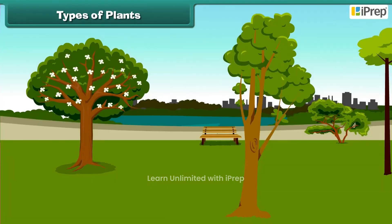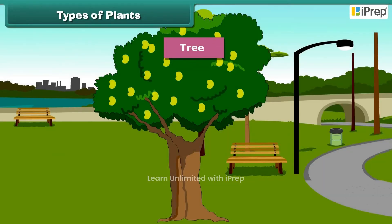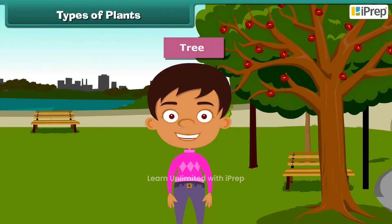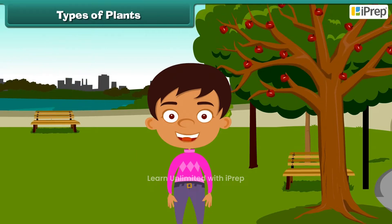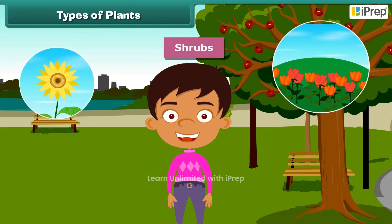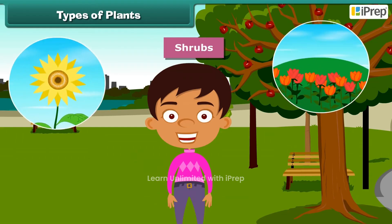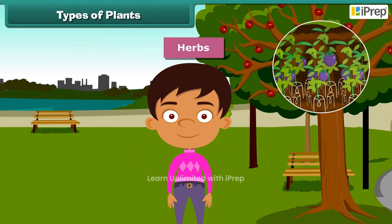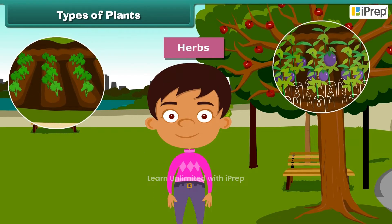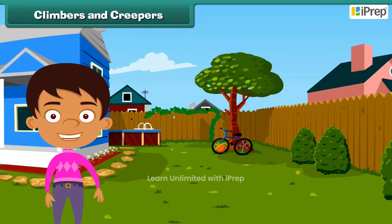Plants which are very tall and strong are called trees — for example, mango tree, coconut tree, and neem. Plants which are smaller than trees are called shrubs, such as rose and sunflower. Some plants are very small and are called herbs; brinjal and spinach are examples of herbs.